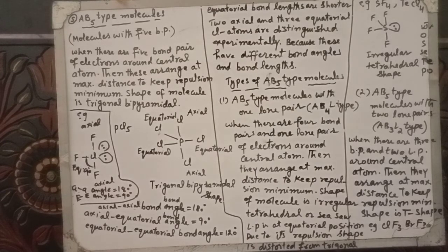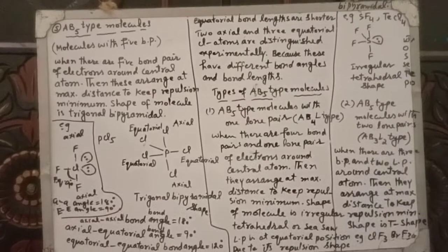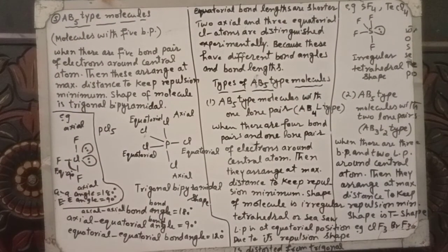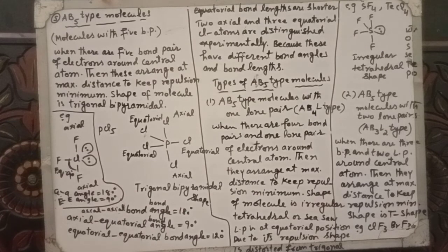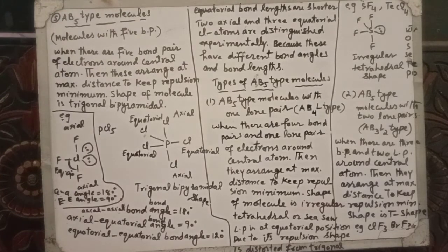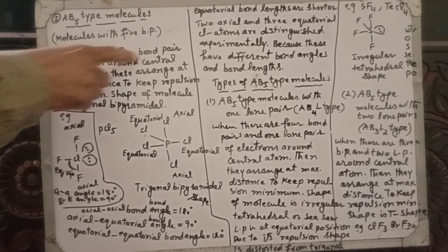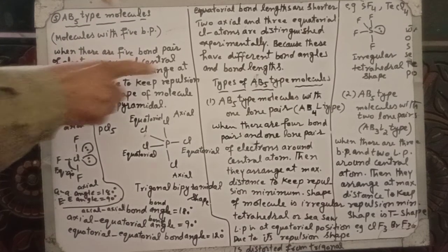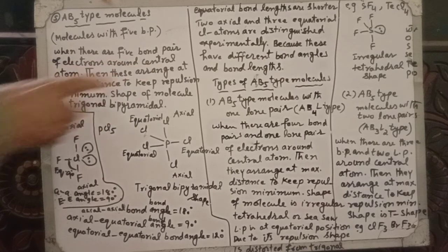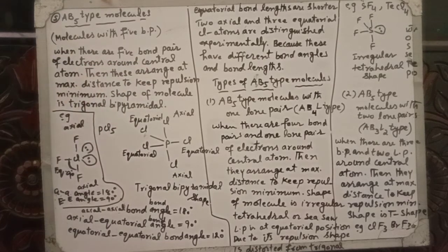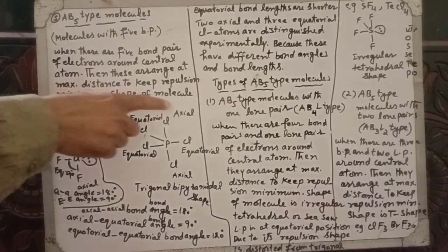Bismillahirrahmanirrahim. Today we are studying the extension of VSEPR theory for AB5 type molecules. When there are five bond pairs of electrons around the central atom, these arrange at maximum distance to keep the repulsion minimum. This is the theme of the VSEPR theory shape of molecules.